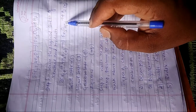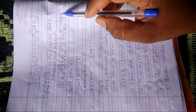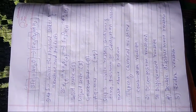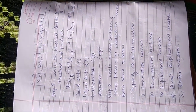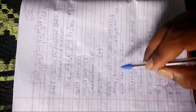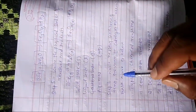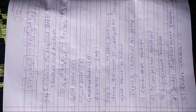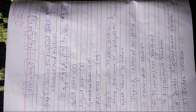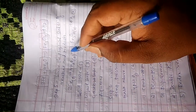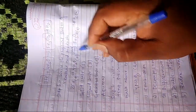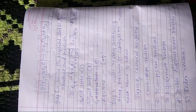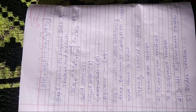Fe₃O₄ is solid, so (s) is written. Hydrogen is a gas — it is not solid or liquid — so (g) is written. In Step 6, write necessary conditions like temperature, pressure, or catalyst on the arrow mark, above or below. You have to write the temperature or catalyst in the sixth step.